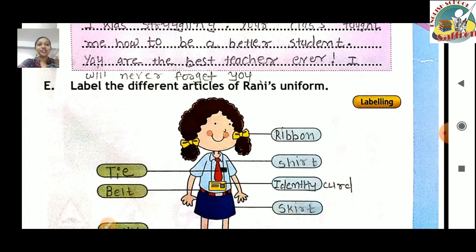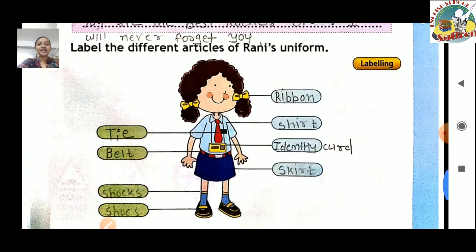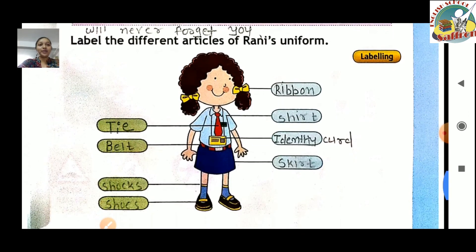Next exercise: label the different articles of Rani's uniform. Rani ki uniform mein: ribbon, shirt, identity card, skirt, tie, belt, socks, and shoes hain — toh maine yahaan pe likha hua hai, waise hi aapko apne book mein fill up karna hai. Yahaan pe hamara chapter finish hota hai.